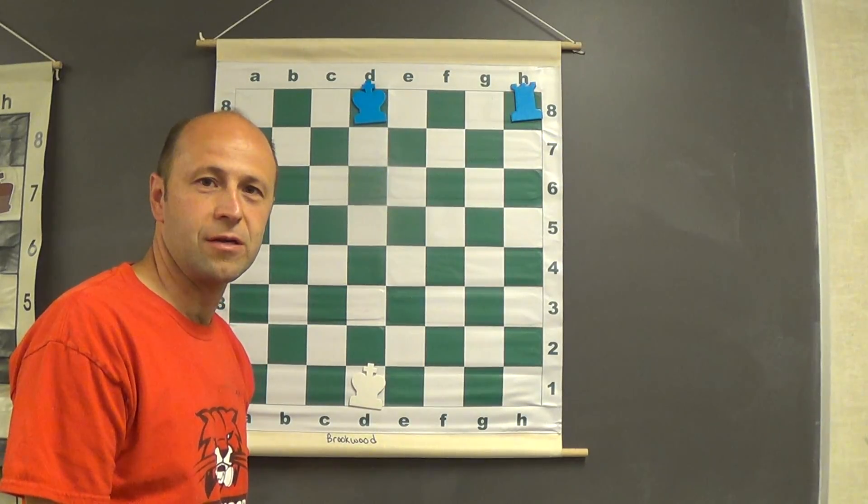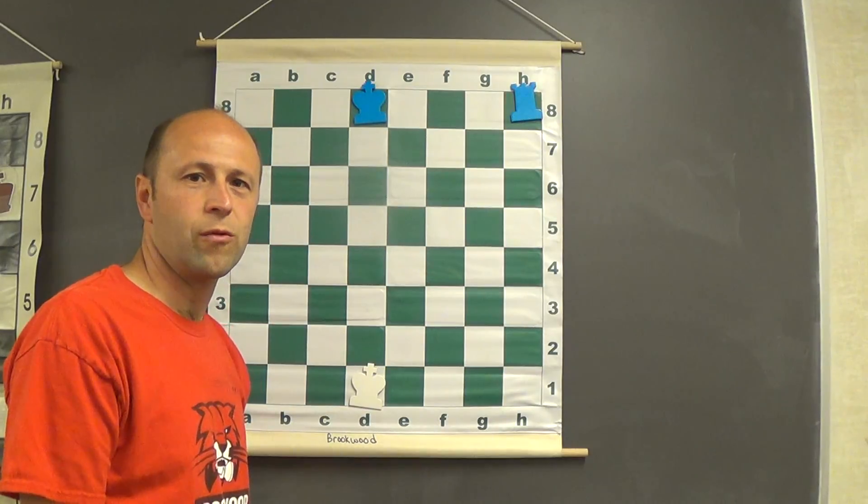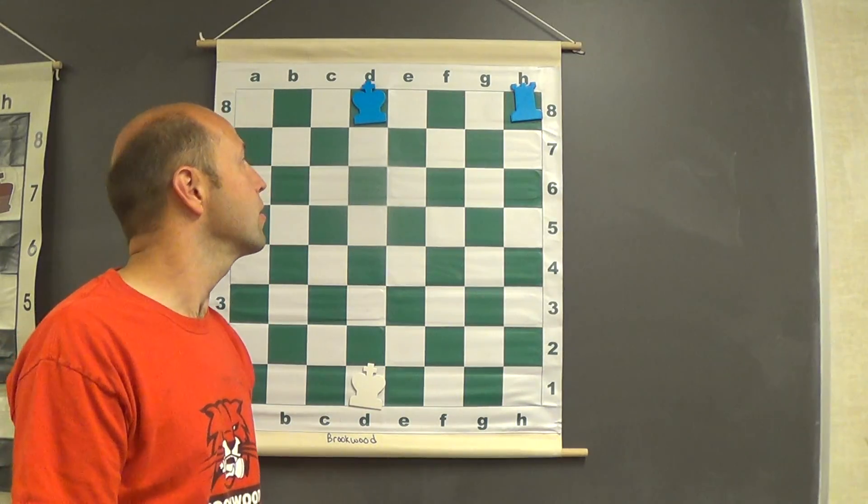Hi, this is Larry Dickinson with Brookwood Chess. This is the box method for a one-rook checkmate that we use.